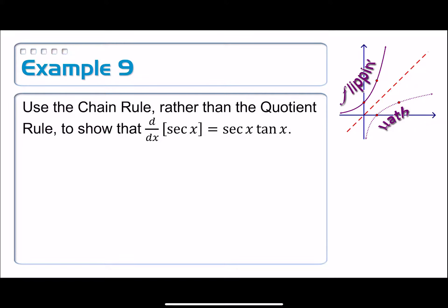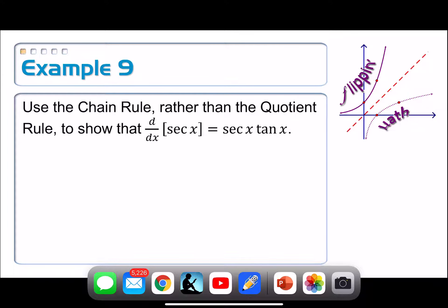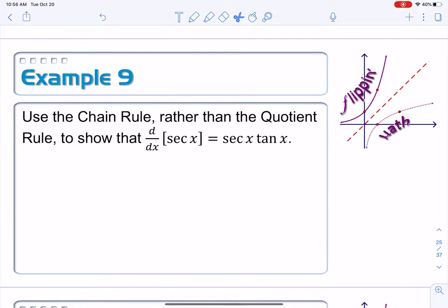Whenever we first prove this derivative rule, that's exactly what we used. We used the quotient rule. We rewrote secant as 1 over cosine like this.